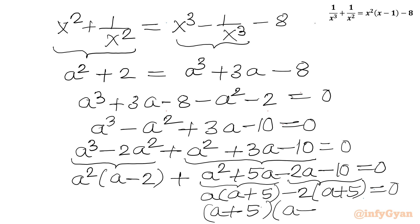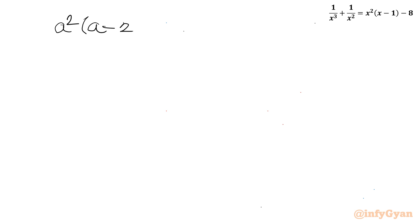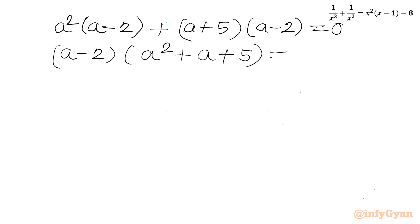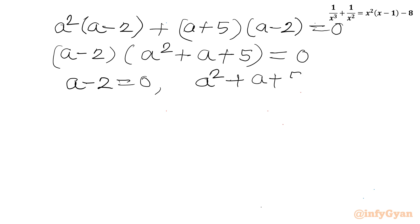Taking A plus 5 as the overall common factor, the bracket gives A minus 2. Writing it out fully: A squared times A minus 2 plus A plus 5 times A minus 2 equal to 0. Now A minus 2 is the overall common factor, giving A minus 2 times A squared plus A plus 5 equal to 0.